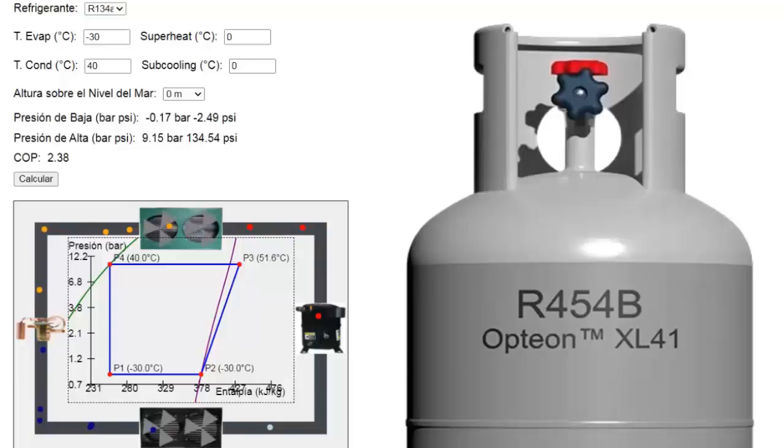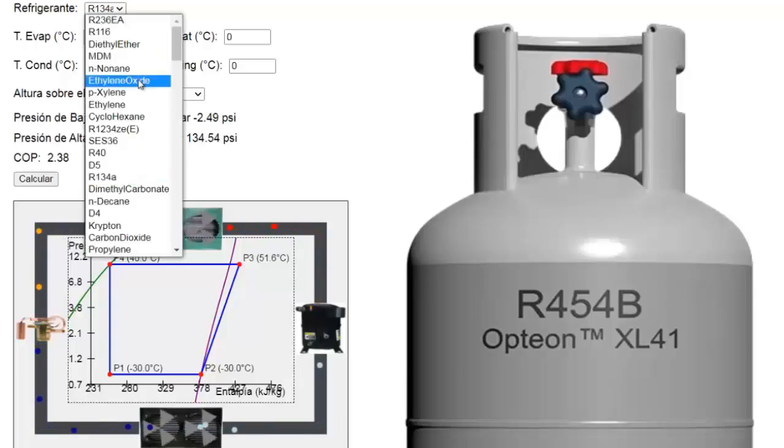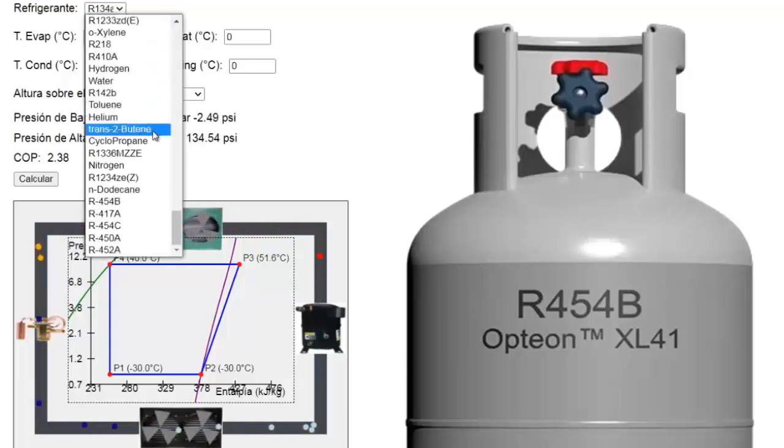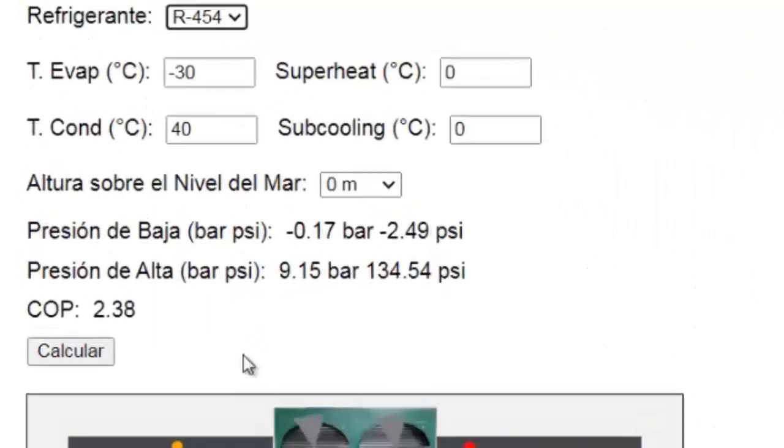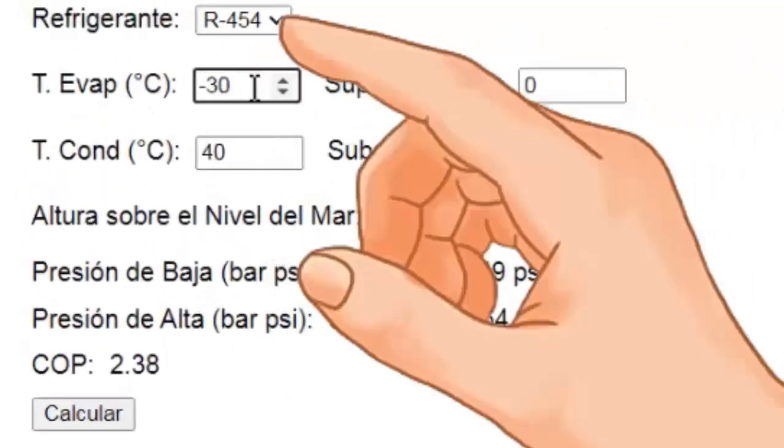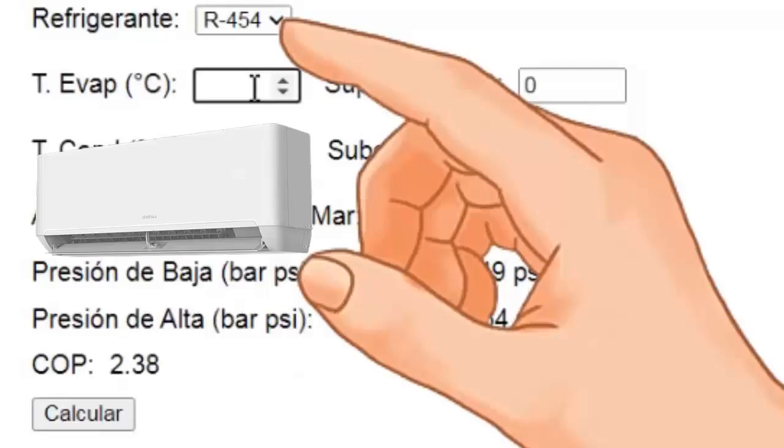Let's begin by selecting R454B in the simulator and setting an evaporation or cooling temperature of 4 degrees Celsius, which is typical for air conditioning systems.